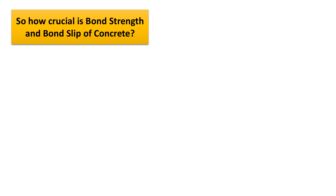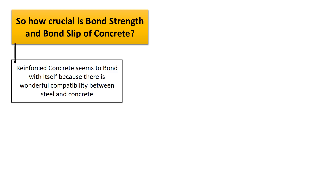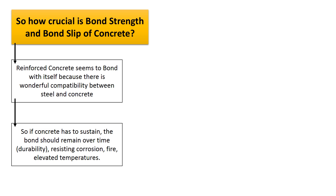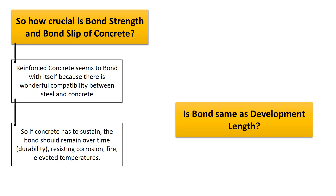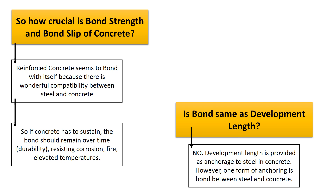Bond behavior is crucial for concrete because reinforced concrete bonds with itself due to wonderful compatibility between steel and concrete. For concrete to sustain, bond should remain over time, resisting corrosion, fire, and elevated temperatures. Finally, is bond the same as development length? The answer is no — development length is provided as anchorage to steel in concrete. However, one form of anchoring is the bond between steel and concrete.